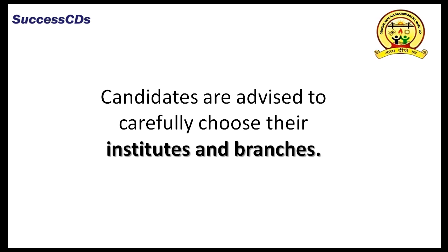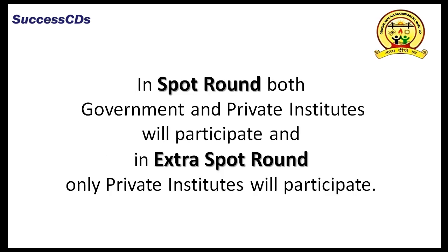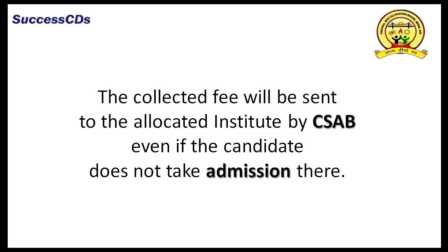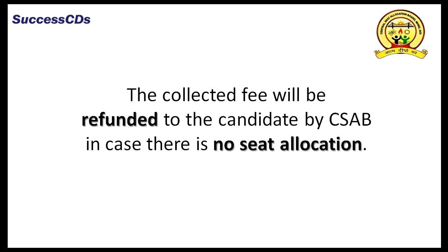Candidates are advised to carefully choose their institutes and branches, as there is no provision of money back if one chooses not to join the allocated institute. Before clicking your choice, make sure that you know enough about all the institutes and branches you are choosing. In spot round, both government institutes and private institutes will participate, and in extra spot round, only private institutes will participate. In spot round, the collected fee is non-refundable if a seat is allocated to a candidate. The collected fee will be sent to the allocated institute by CSAB even if a candidate does not take admission there. The collected fee will be refunded to the candidate by CSAB in case there is no seat allocation.